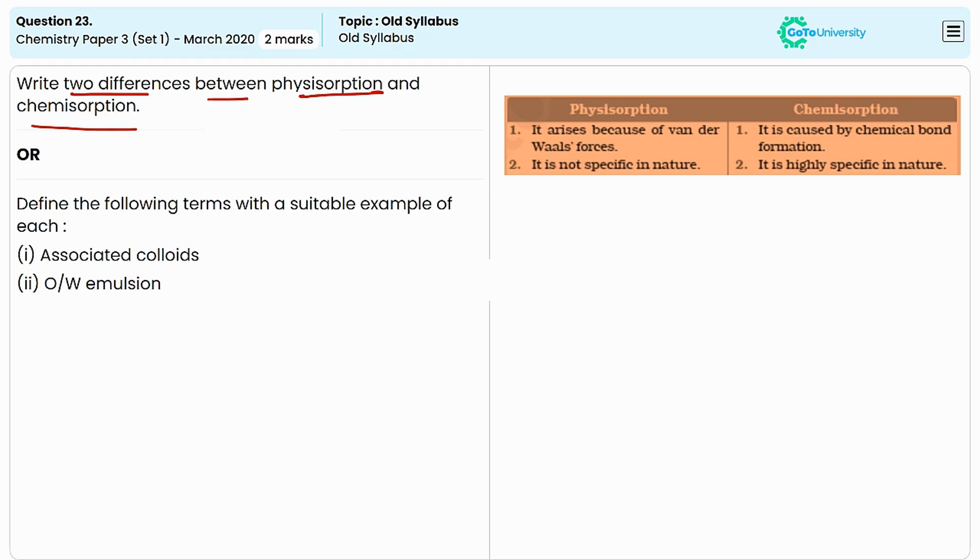In terms of reversibility, physisorption is generally reversible and the adsorbate can be easily removed with changes in temperature or pressure. This is a temperature-dependent process favored at lower temperatures.